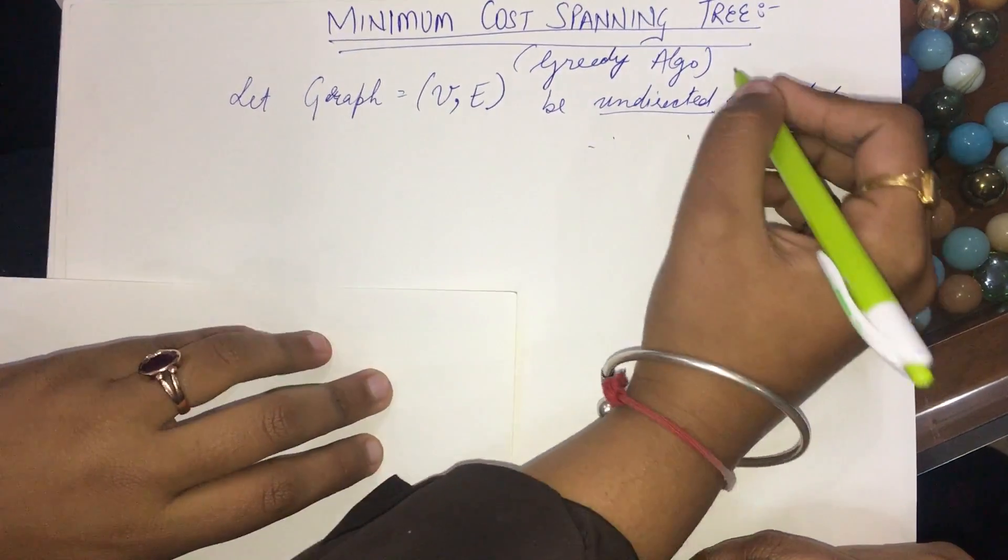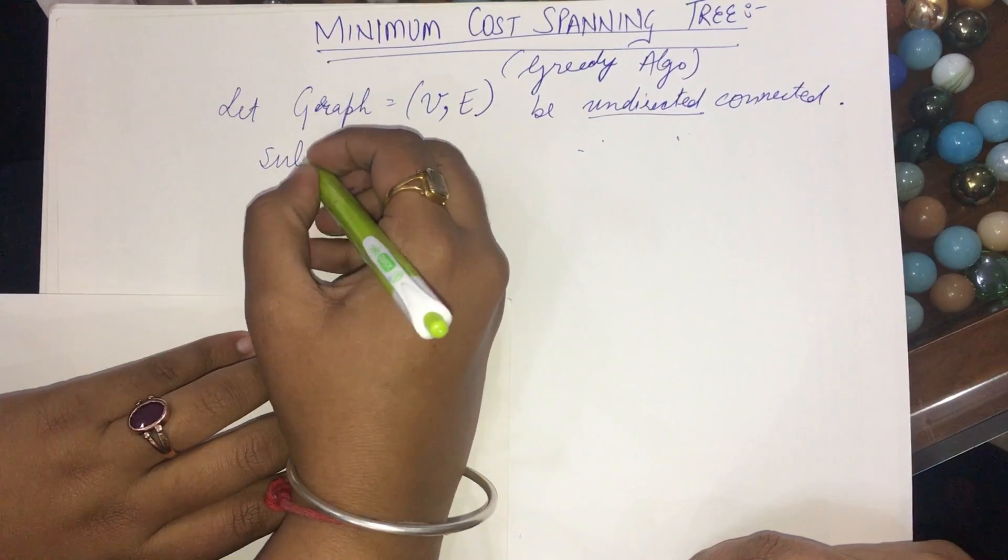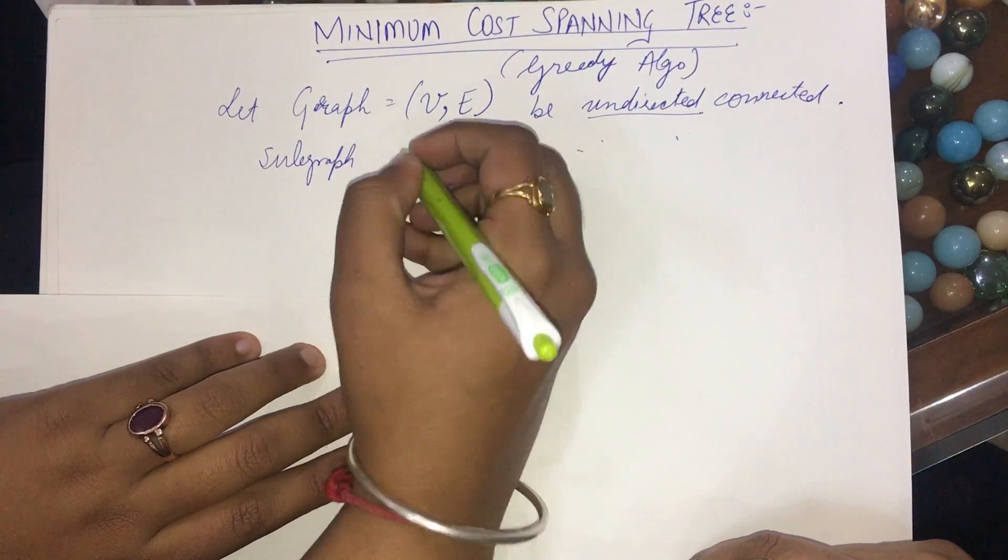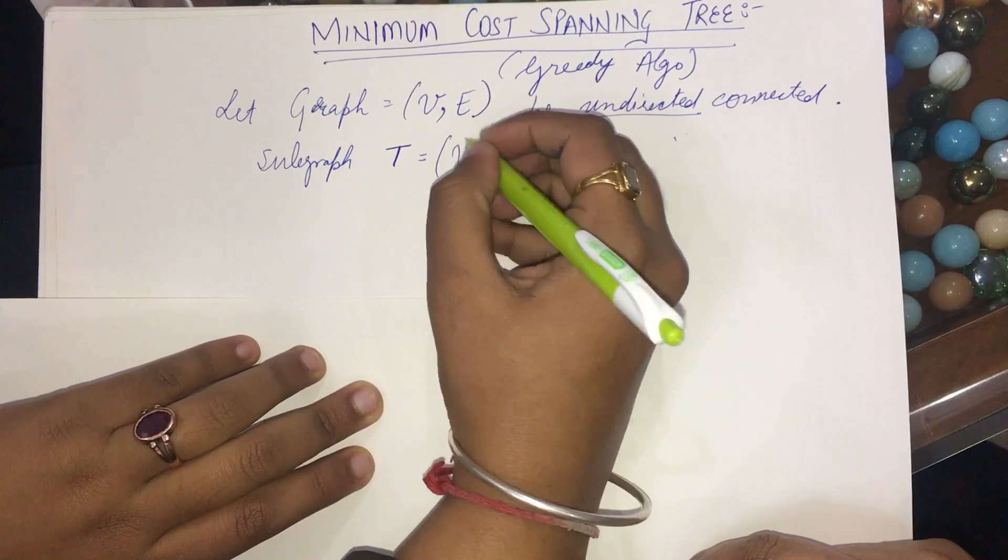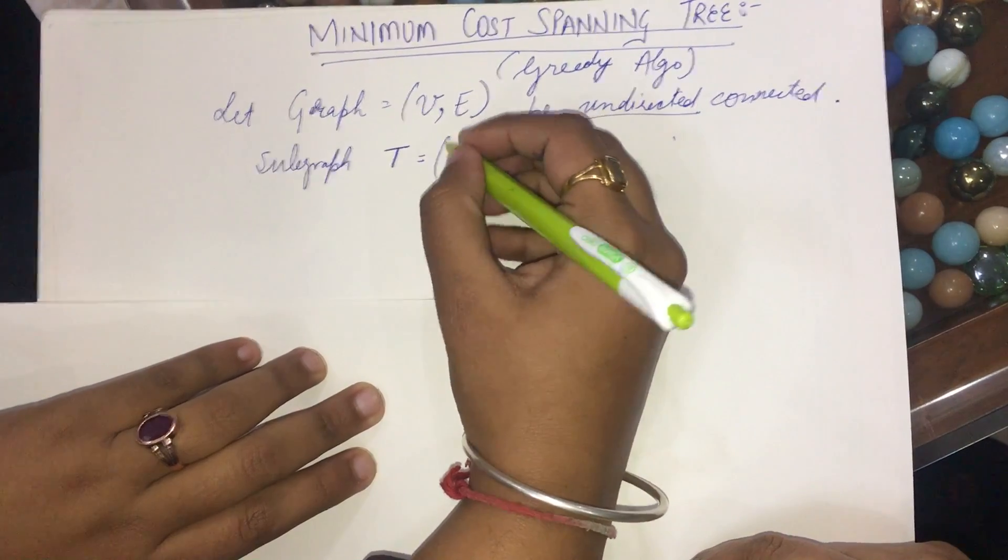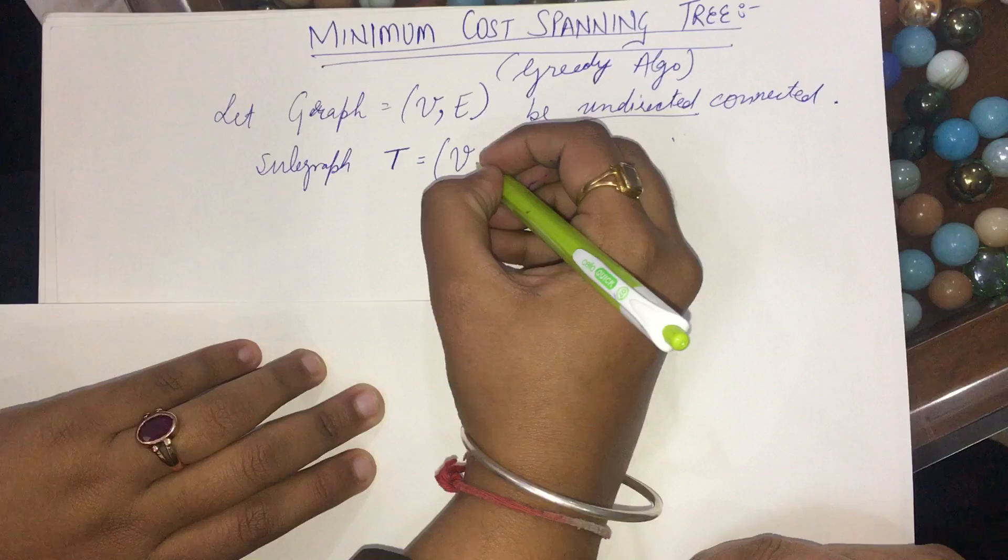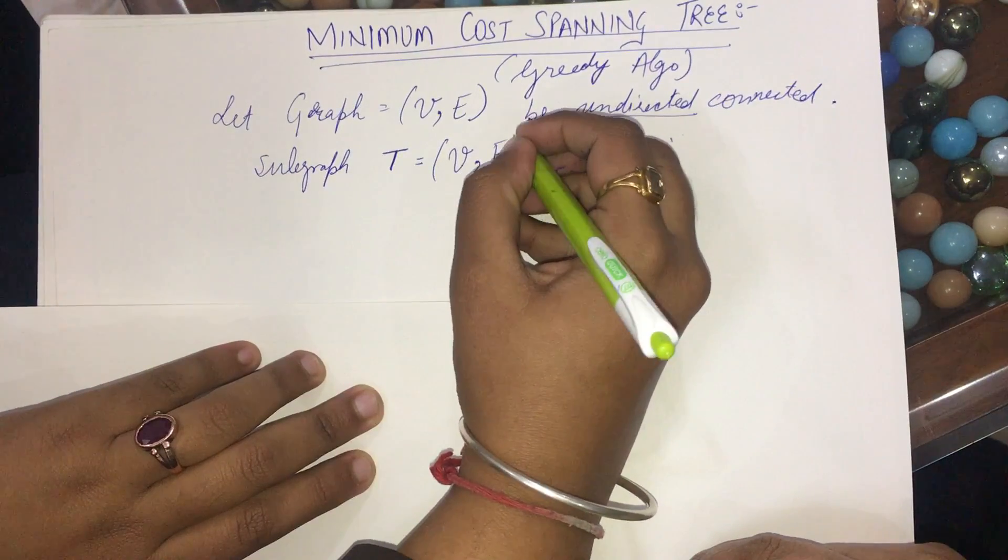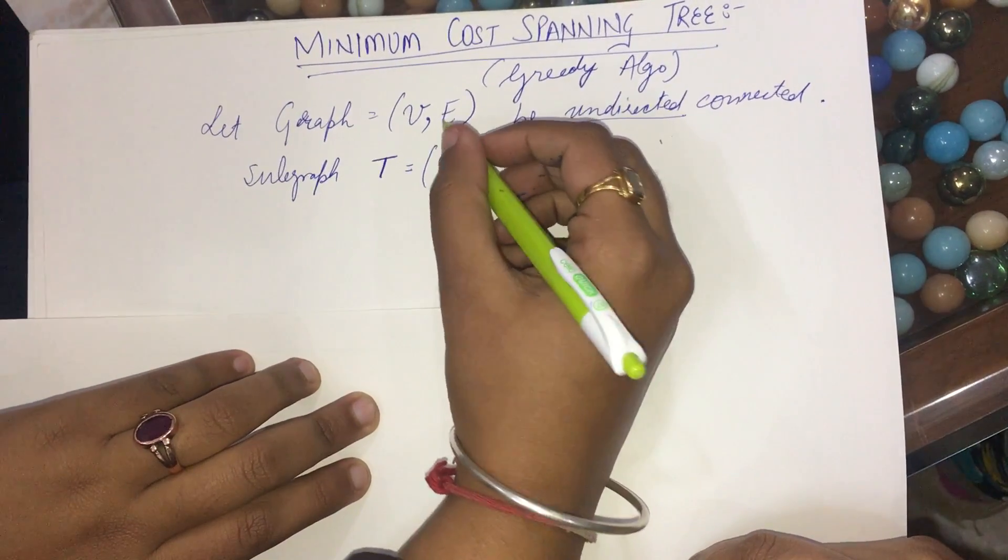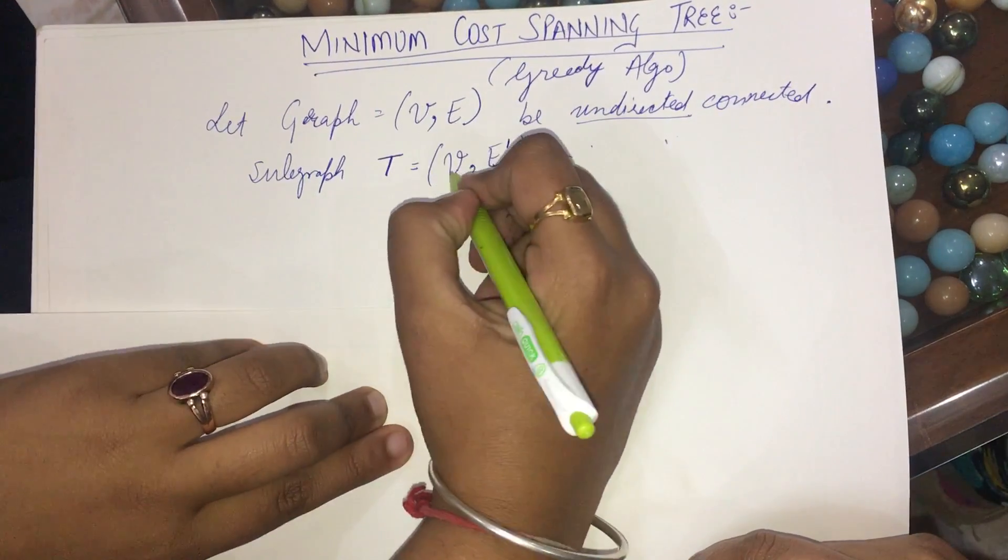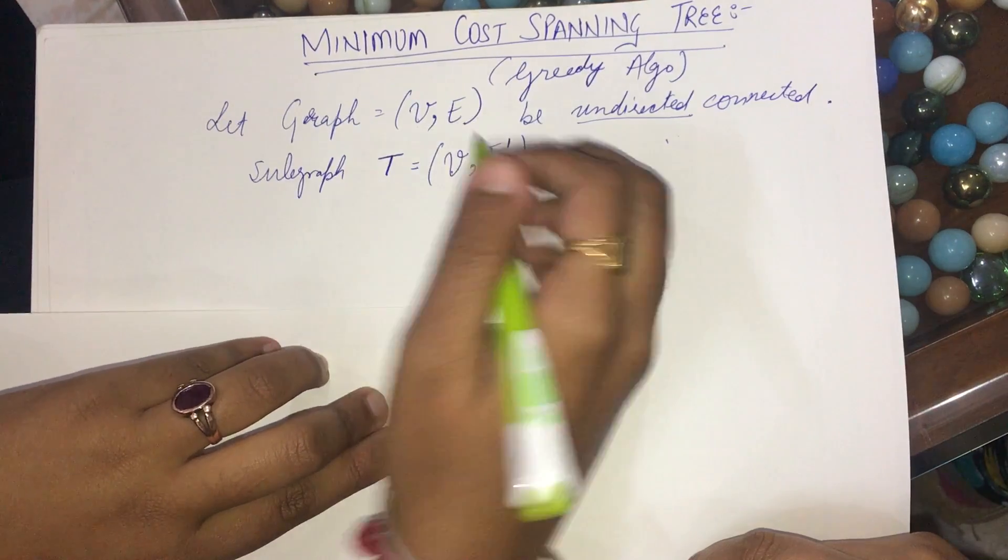And so what I have to do is construct a subgraph T such that its vertices are the same. That is, it has all the vertices of the graph V. We are only going to change the edges, and the edges will be a subset of the graph G. That is, the number of vertices will be the same. We will only reduce the number of edges.